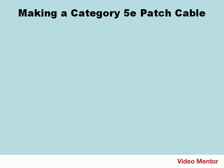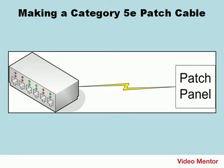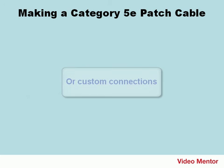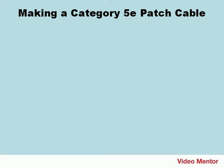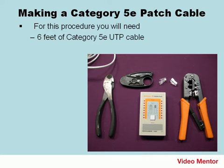So let's talk about making a Category 5E patch cable. Sometimes you'll be called upon to make a patch cable — this may be either to connect a computer to a jack or to connect a port on a patch panel to a hub or switch. It could also be to make a custom link. For this procedure, you'll need the following: six feet of Category 5E UTP cable, or Category 5 will work as well, and two RJ45 plugs.